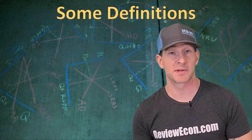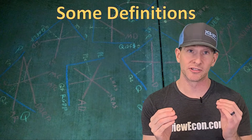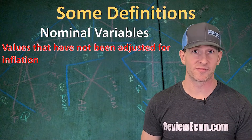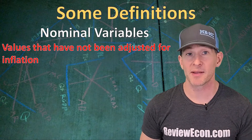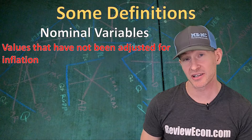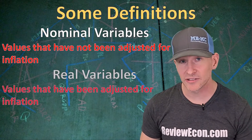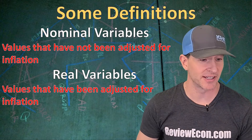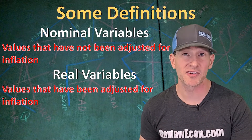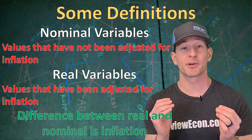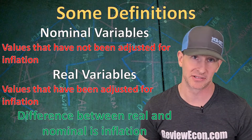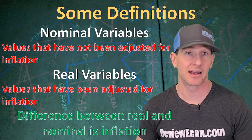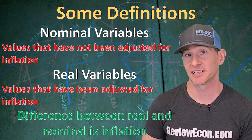When it comes to understanding inflation, it's all about understanding the difference between nominal values and real values. Nominal variables are values that have not been adjusted for inflation — they tend to go up over time much faster than if we had adjusted for inflation. In economics, real values are more important. Real variables have been adjusted for inflation, so the difference between real and nominal values is inflation. Adjusting between them is about removing the price changes caused by inflation.